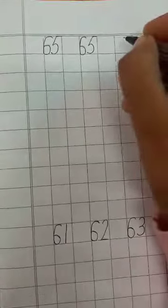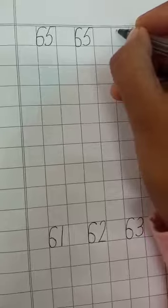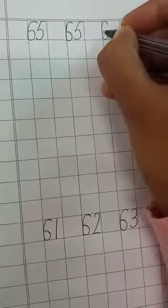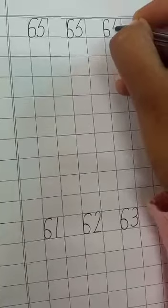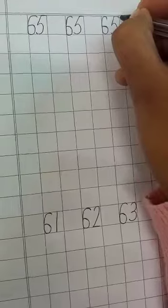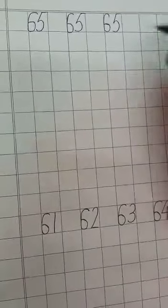Let's write the number. On the left side, you will write number 6. On the right side, you will write number 5. This is number 65.